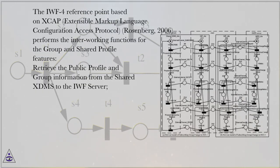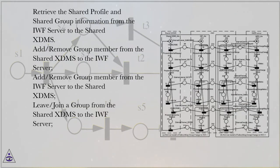In this model, we set up a new reference point IWF4 to support the communication between the shared XDMS and IWF, and set up a new reference point IWF5 to support the searching interworking between IWF and search proxy, which has been defined to search XML documents stored in any XDM servers in OMA Simple XDM 2.0. The IWF4 reference point is based on XCAP, Extensible Markup Language Configuration Access Protocol, Rosenberg 2006, and performs the interworking functions for the group and shared profile features.